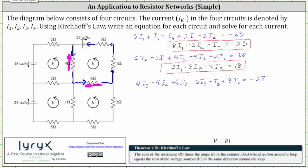Combining like terms on the left: we have negative four I sub two, and then four I sub three plus six I sub three plus I sub three plus three I sub three equals 14 I sub three, giving us plus 14 I sub three, minus six I sub four equals negative 27. That's the simplified equation for circuit three.